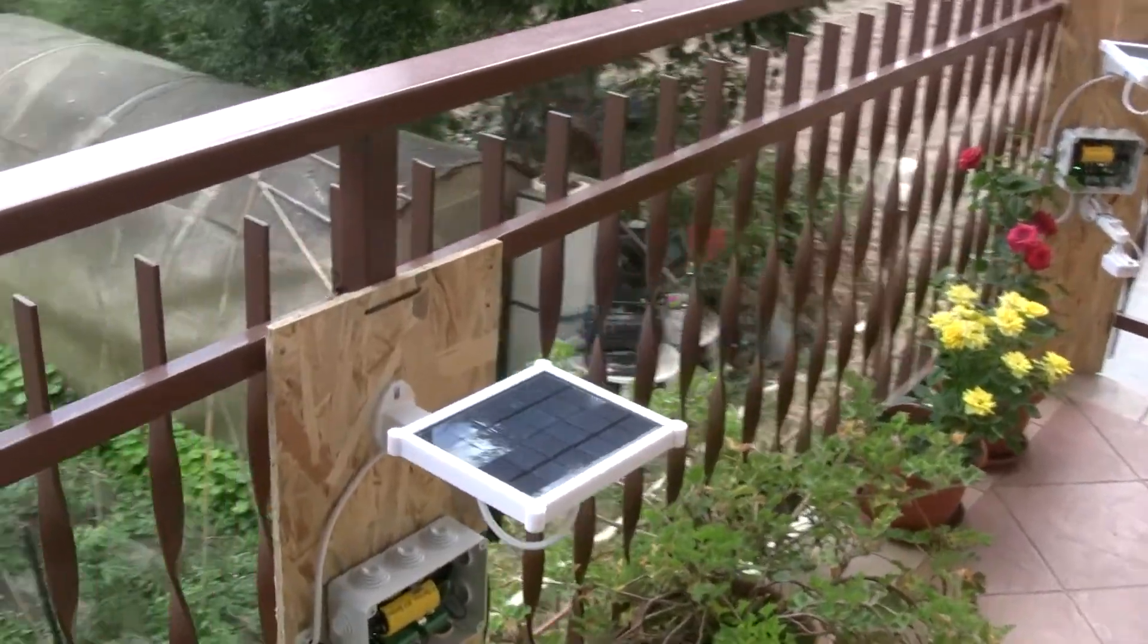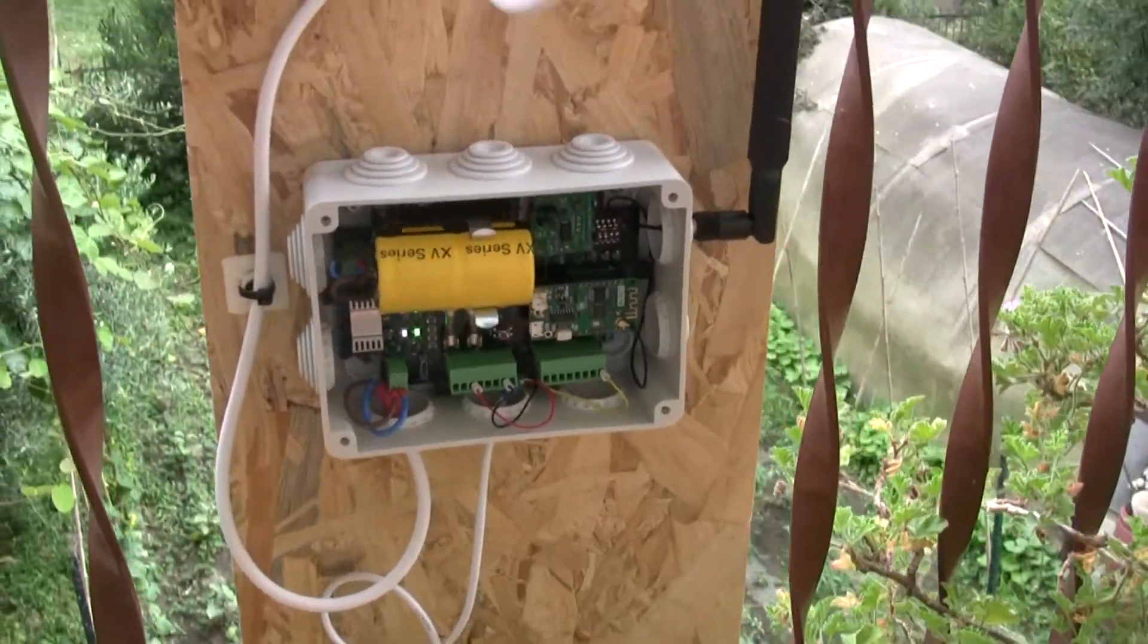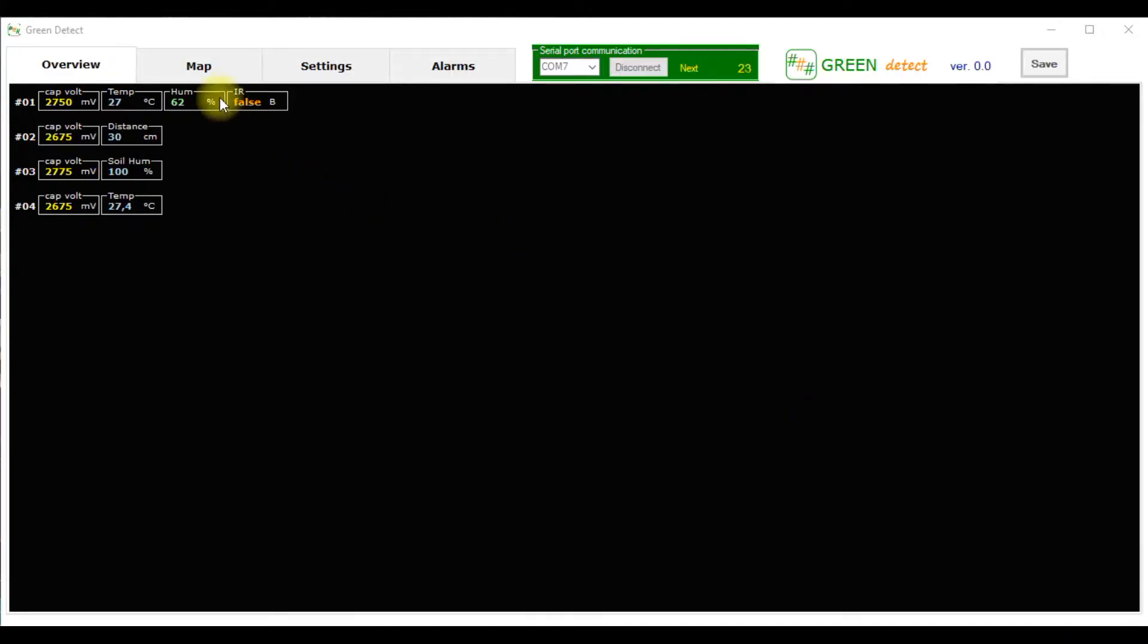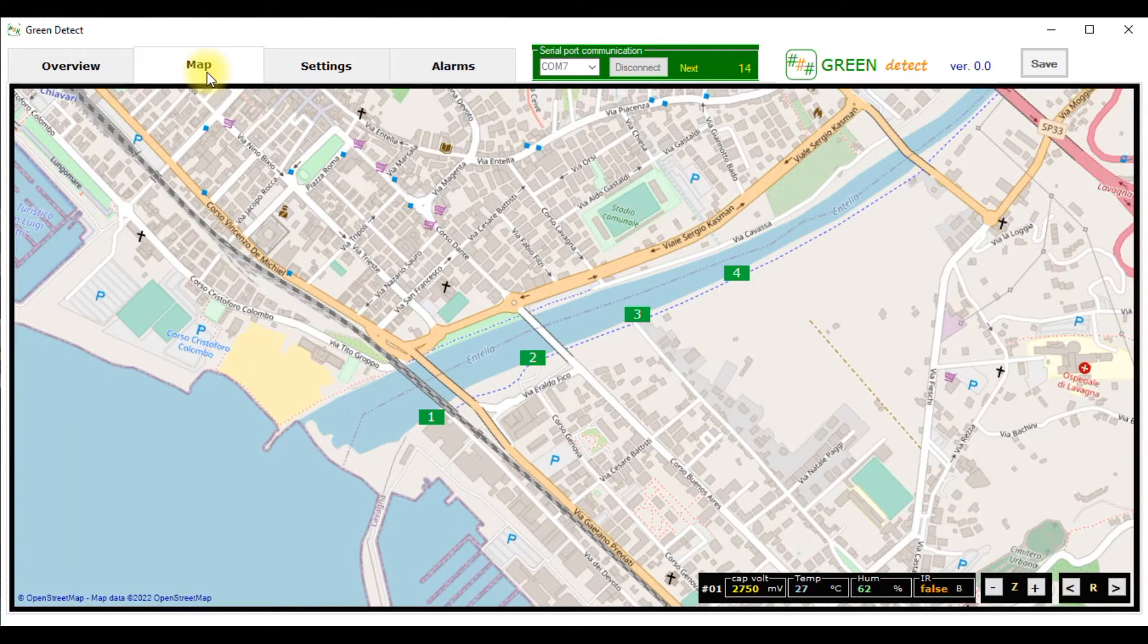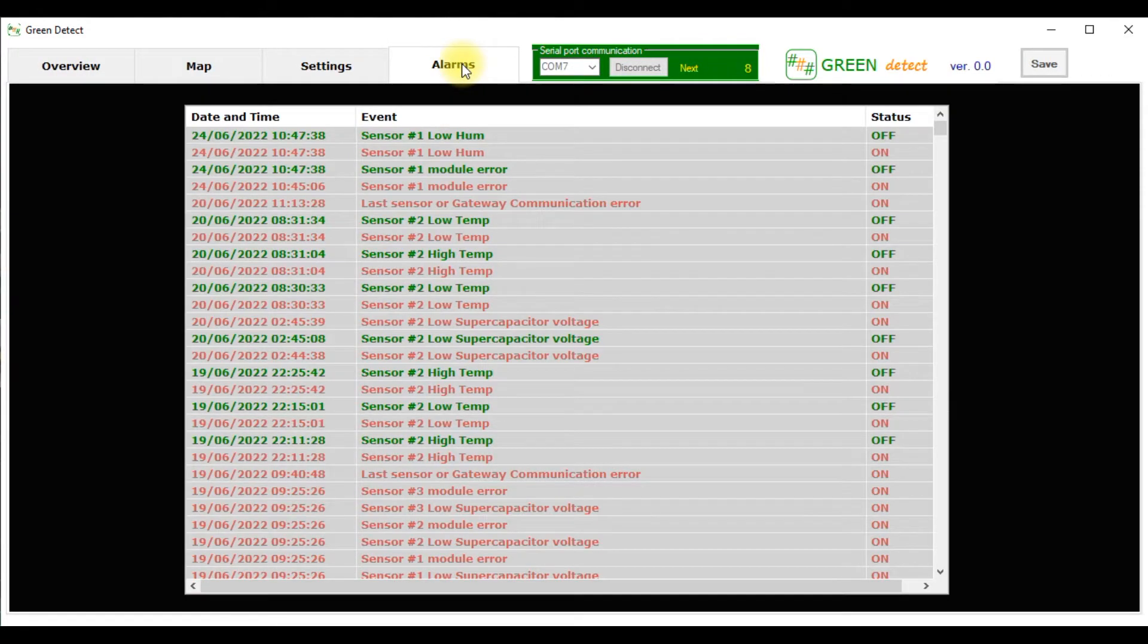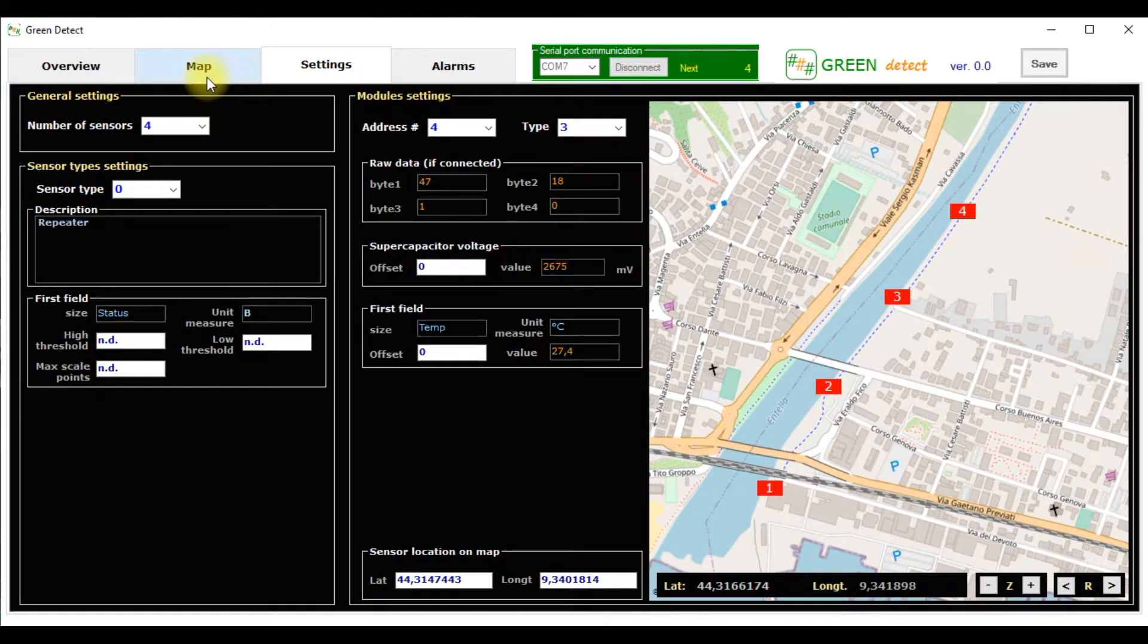In the Green Detect network, it is possible to connect from 1 to 60 sensors that transmit their data via wireless through the ESPNOW protocol. Through the Green Detect application, it is possible to monitor each individual sensor, detect alarm conditions, locate the sensors in an animated geographic map, and record all acquisitions for preventive and statistical purposes.